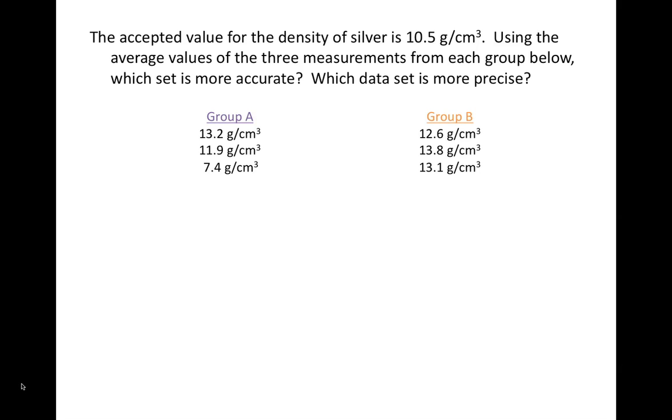Now let's look at an example using some real numbers. The accepted value for the density of silver is 10.5 grams per centimeter cubed. Using the average values of the three measurements from each group below, which set is more accurate? Which data set is more precise?